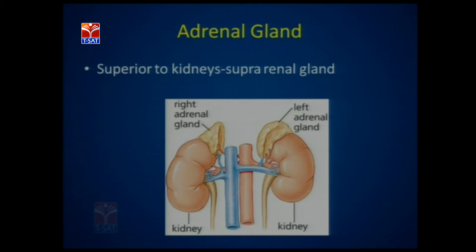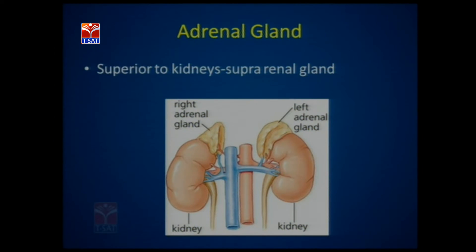The adrenal glands are present just above the kidneys, superior to the kidneys — hence the name suprarenal gland. Here is a diagram where you can see the cup-like structures above the kidneys, which are the adrenal glands.